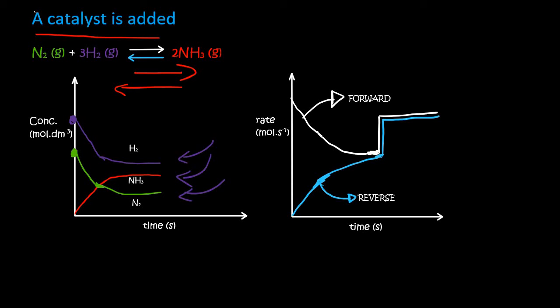And so what you will see is something like this happening on your rate graph. There will be a sudden jump, but you'll still be at equilibrium. This jump takes place instantly and it affects the forward and the reverse reaction, but nothing happens to the equilibrium. The concentration stays the same, everything just proceeds as normal, it just happens a lot faster.